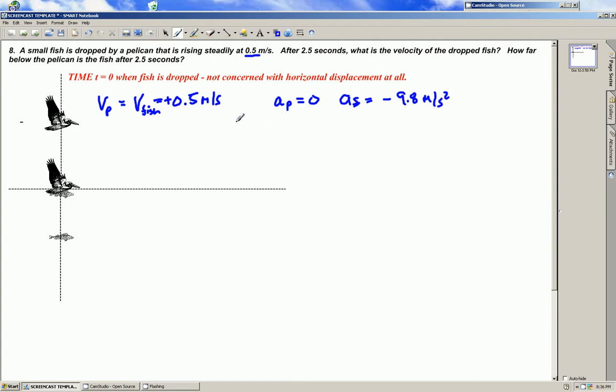First part of the question asks what is the velocity of the fish after 2.5 seconds. The velocity of the fish, the final velocity from the definition of acceleration, is equal to the initial velocity of the fish plus its acceleration times the time.